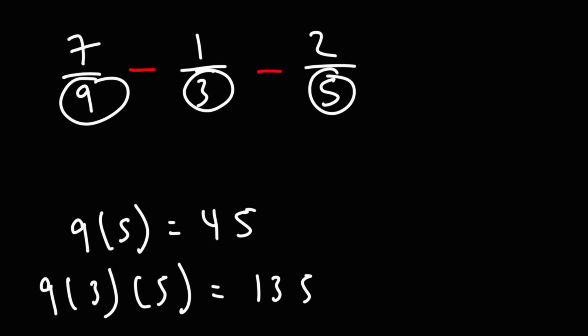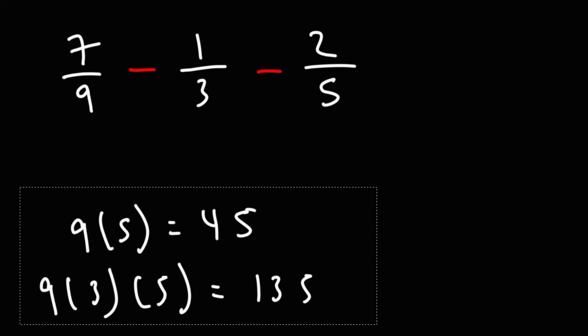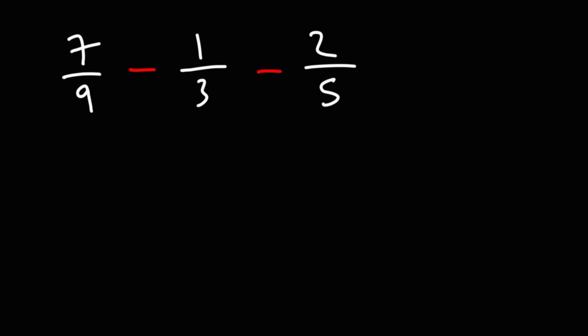9, 3, and 5, they're all multiples. They can all go into 45. But if you were to use 135, you could still get the right answer. You just have to simplify the answer at the end. But let's try to get a common denominator of 45.